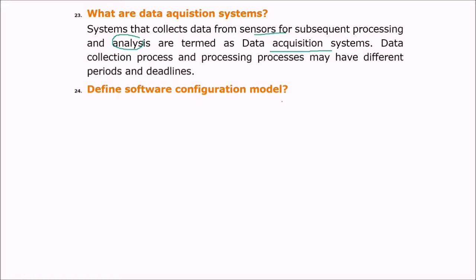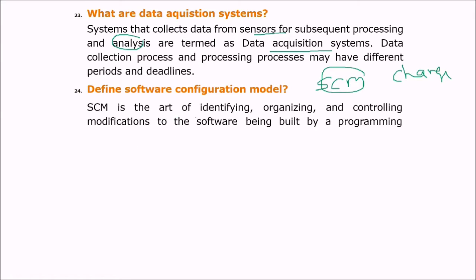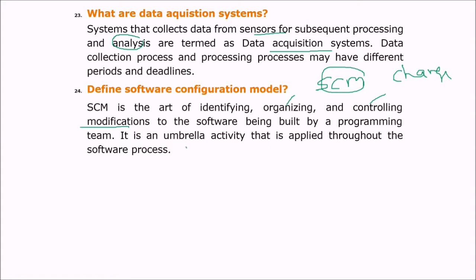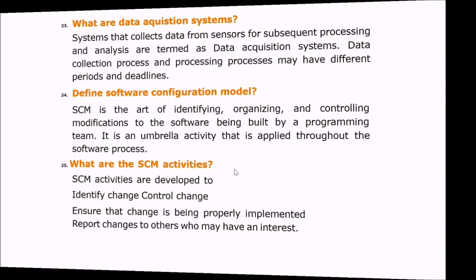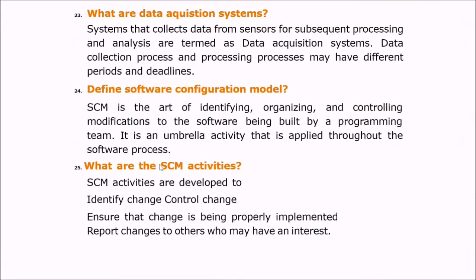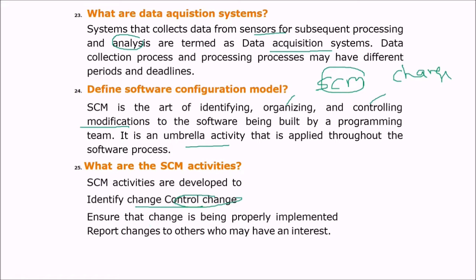Define the software configuration model (SCM). Whenever SCM is mentioned, remember the word 'change.' SCM is the art of identifying, organizing, and controlling modifications — that is, changes to the software being built by a programming team. It is an umbrella activity applied throughout the software process. SCM activities are developed to identify change, control change, ensure change is properly implemented, and report change to others who may have interest.